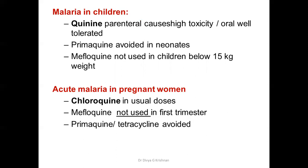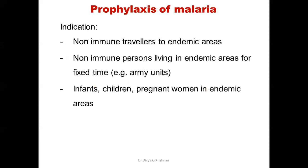For malaria in children, chloroquine can be used, but parenteral quinine can cause high toxicity; oral quinine can be tolerated. Primaquine and mefloquine should be avoided in children. For malaria in pregnancy, chloroquine in usual doses can be given, but mefloquine, primaquine, and tetracycline should be avoided. Since primaquine is part of most acute uncomplicated malaria regimens, it cannot be given to pregnant women.